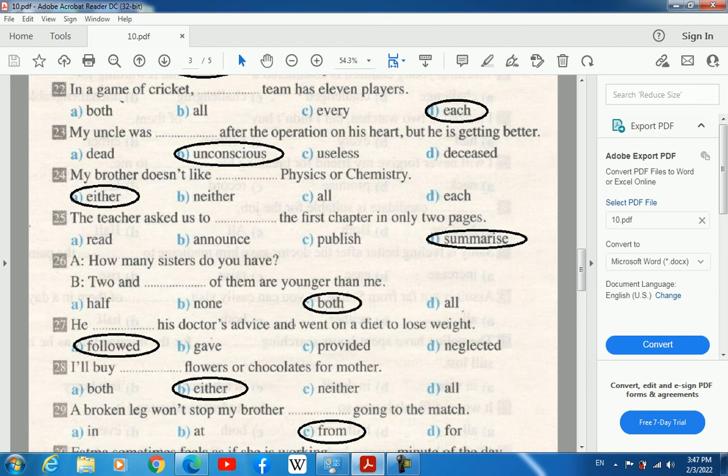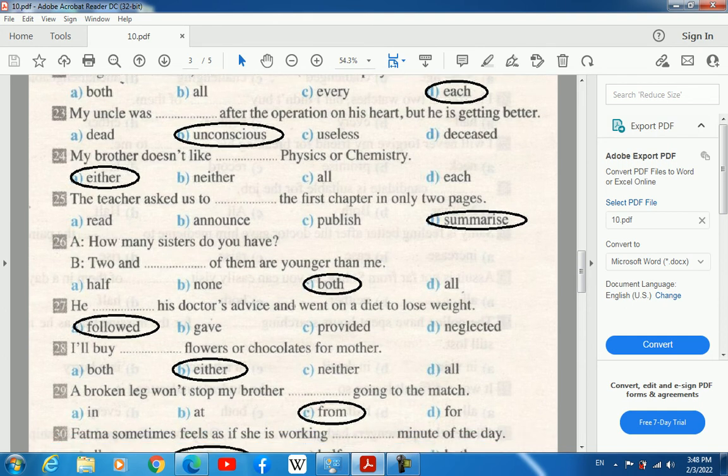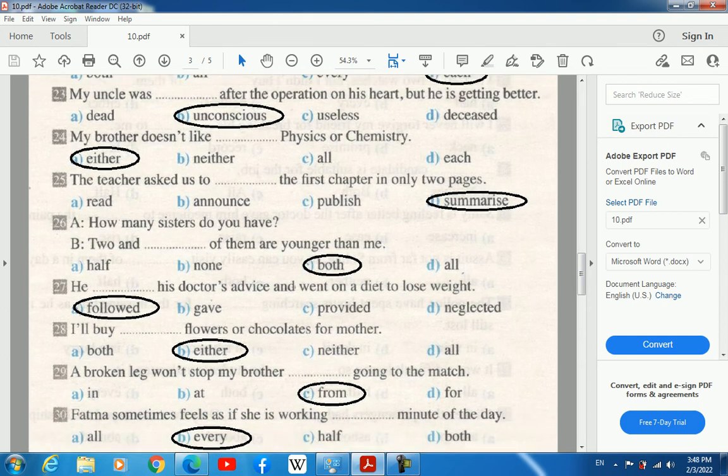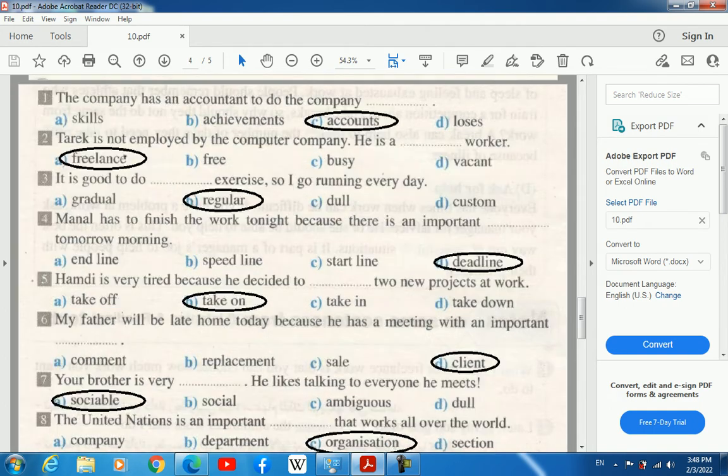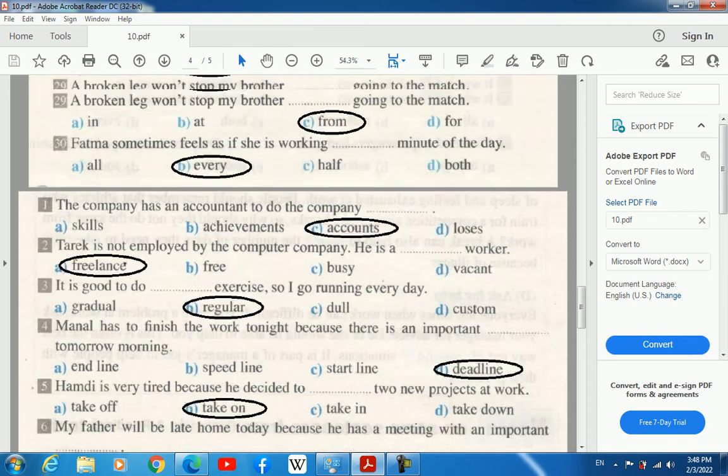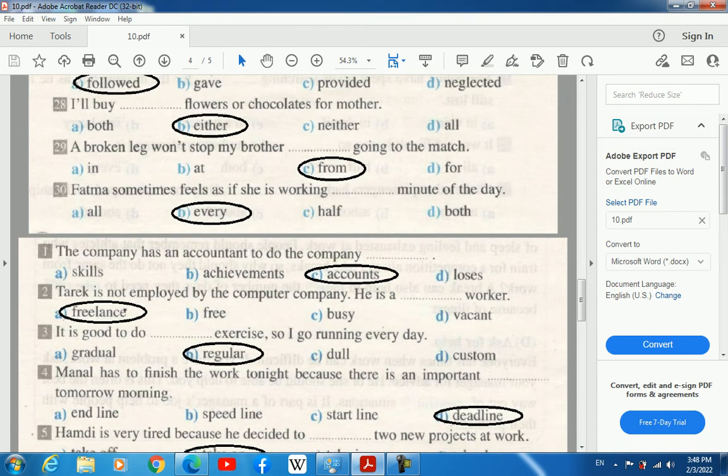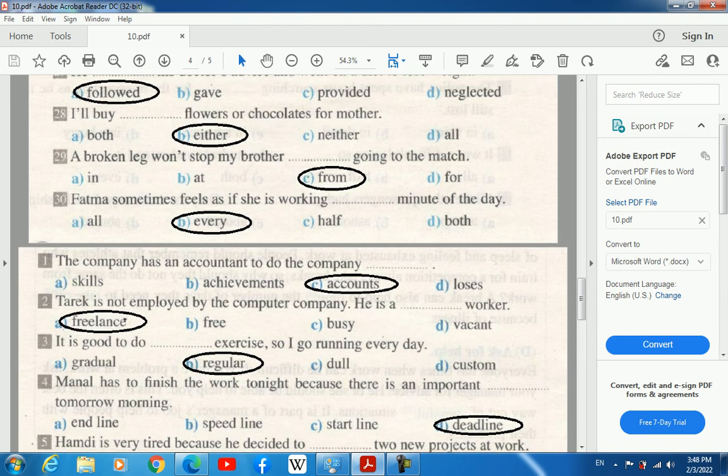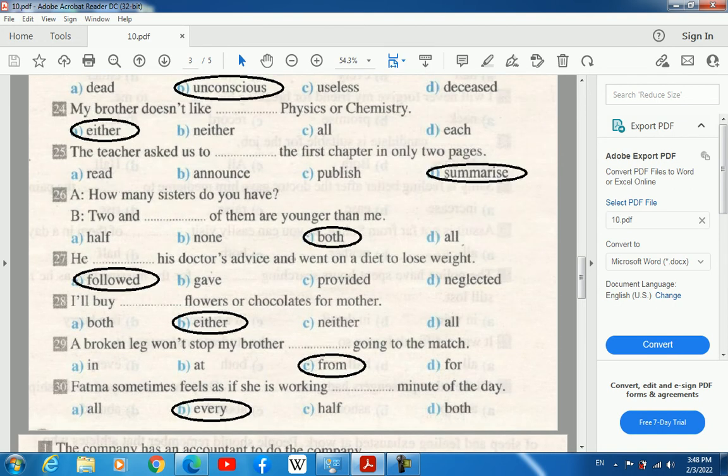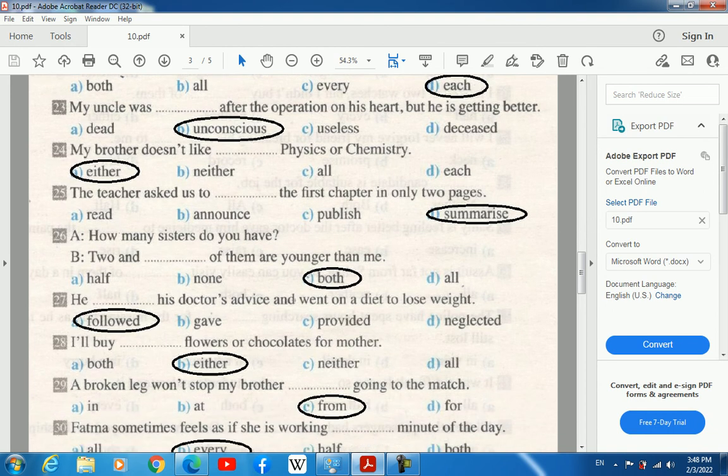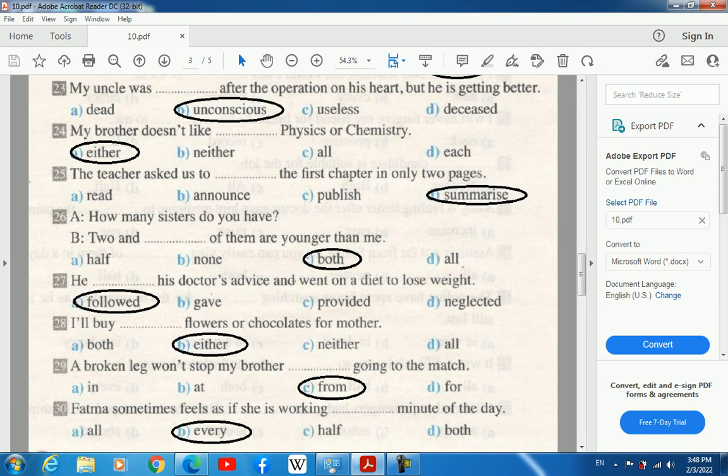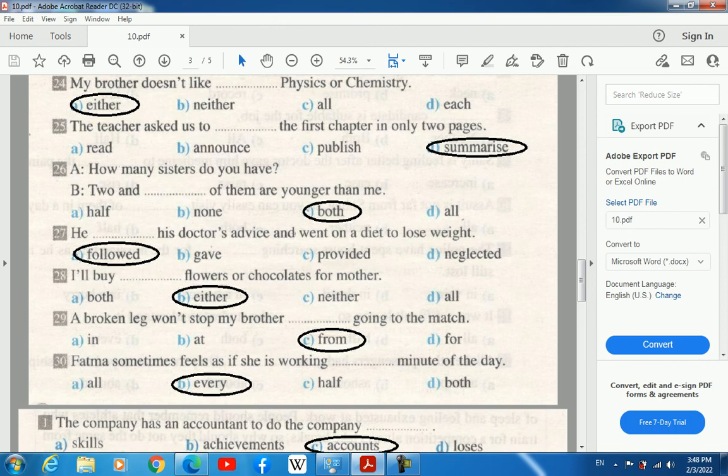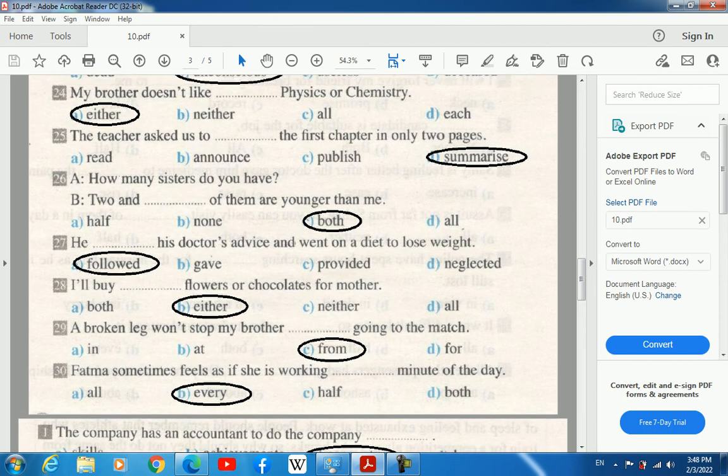22. In a game of cricket, each team has 11 players. 23. My uncle was unconscious after the operation on his heart, but he is getting better. 24. My brother doesn't like either physics or chemistry.